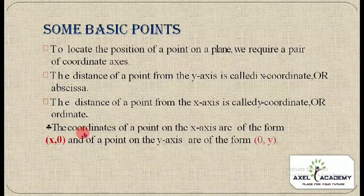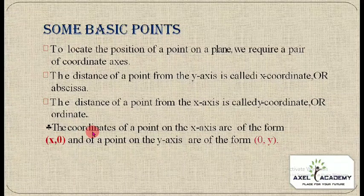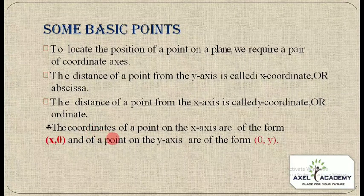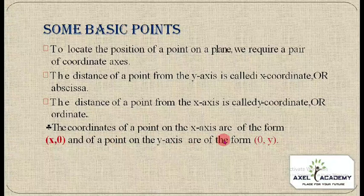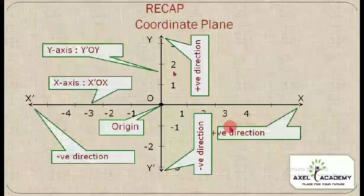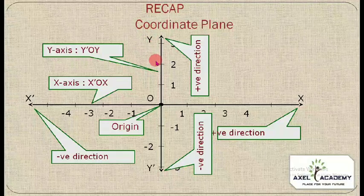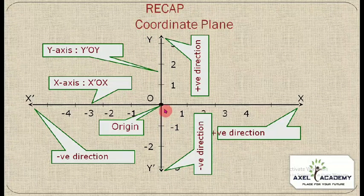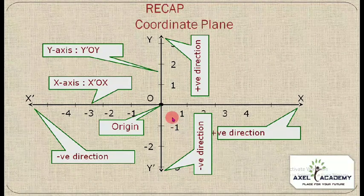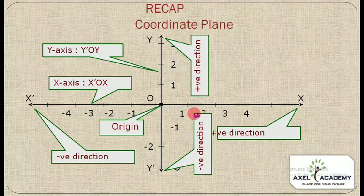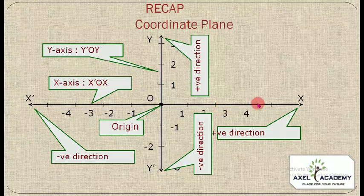The coordinates of a point on the x-axis are of the form (x, 0), and of a point on the y-axis are of the form (0, y). Now let's look at the coordinate axes, which will help you understand the meaning of abscissa, ordinate, and quadrant.